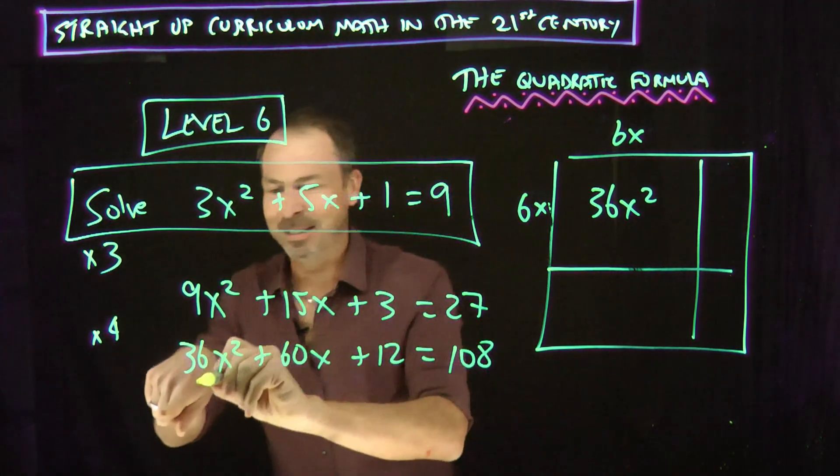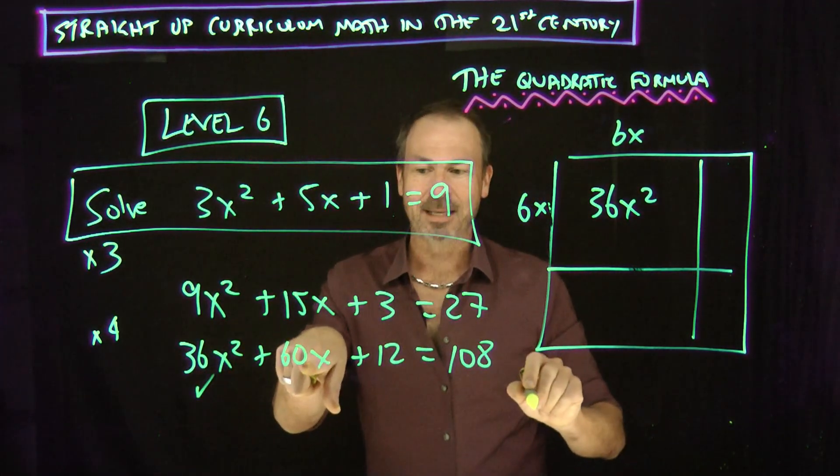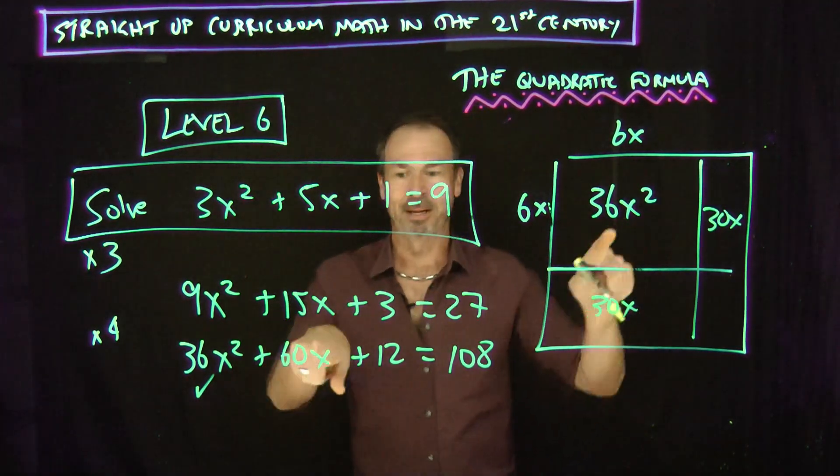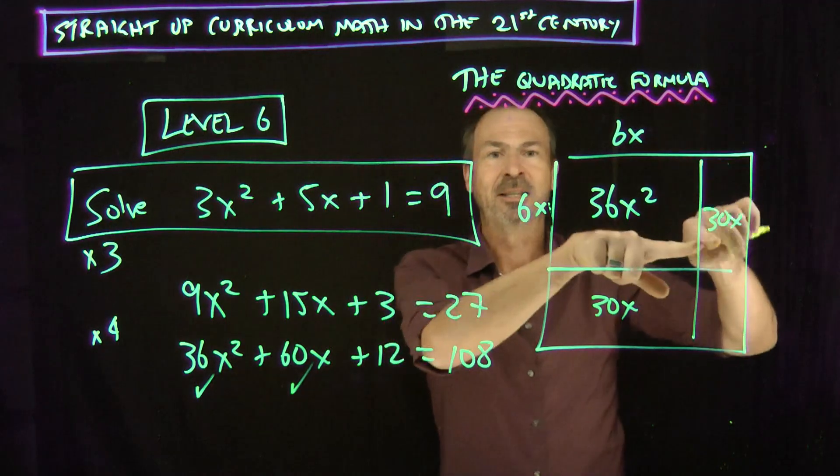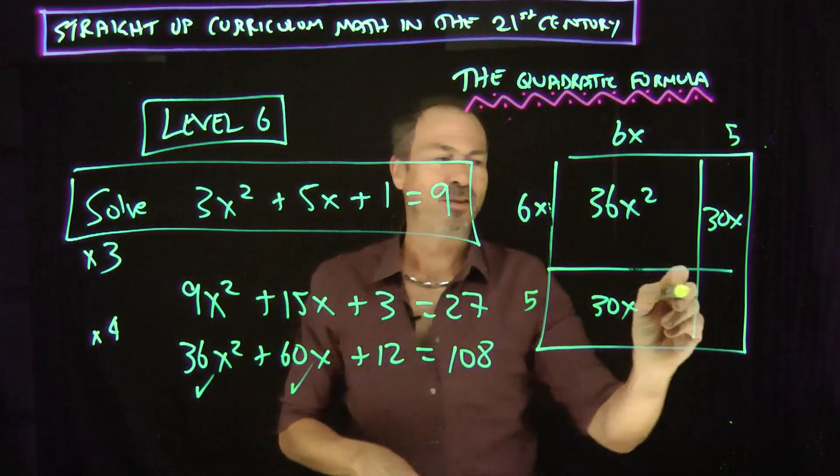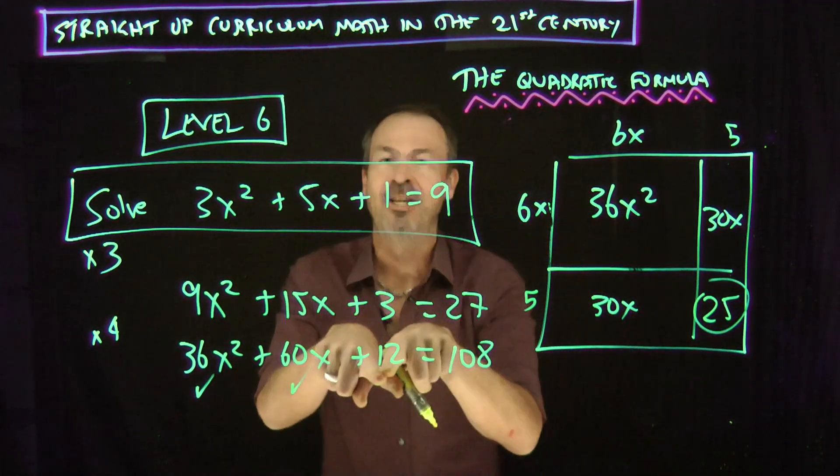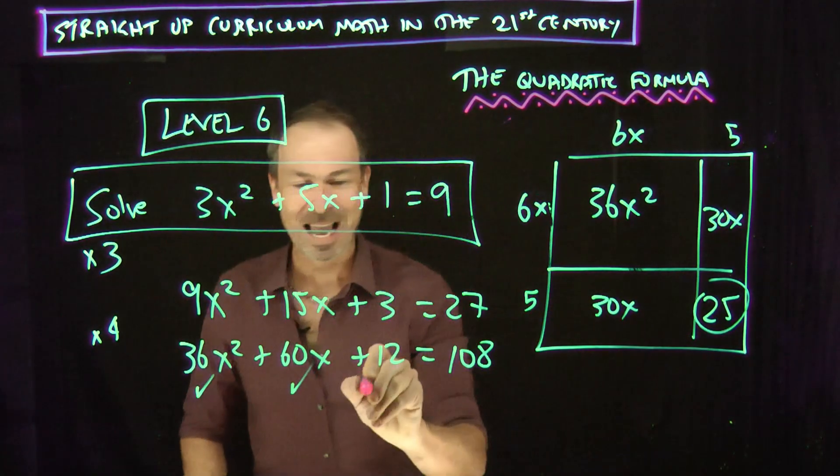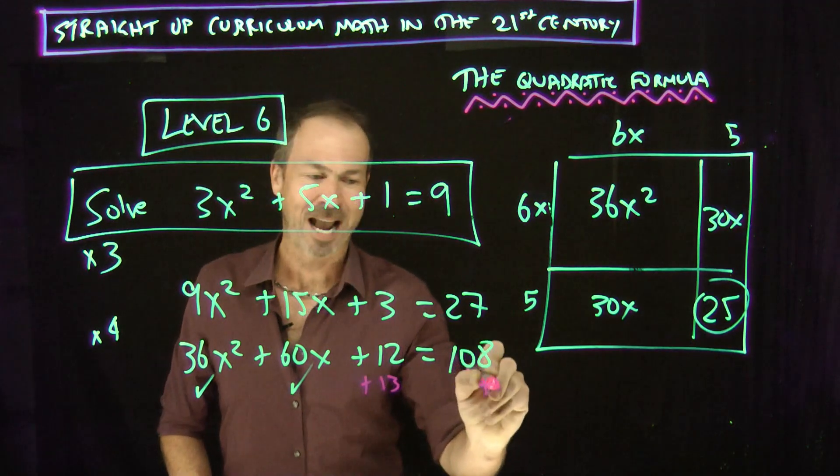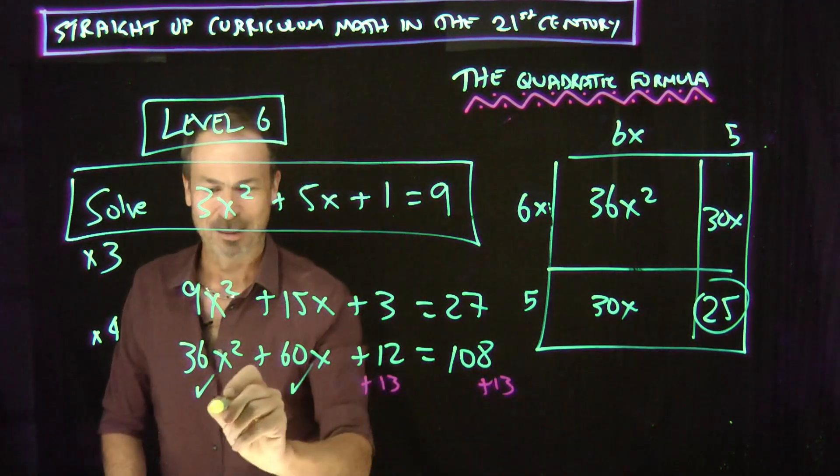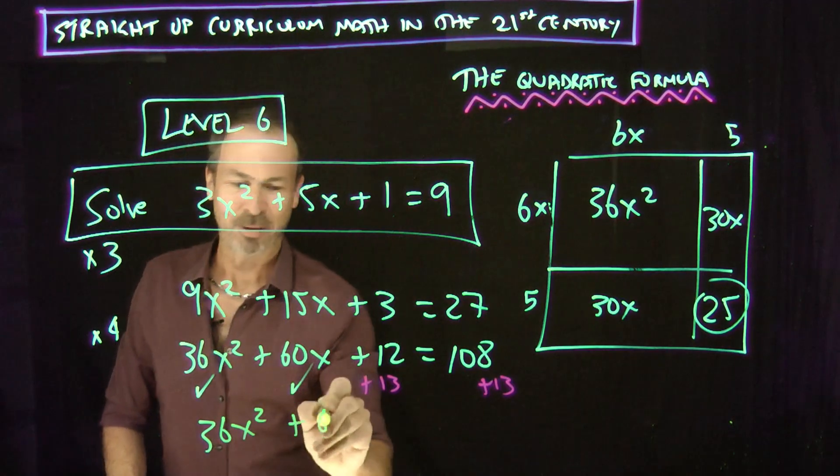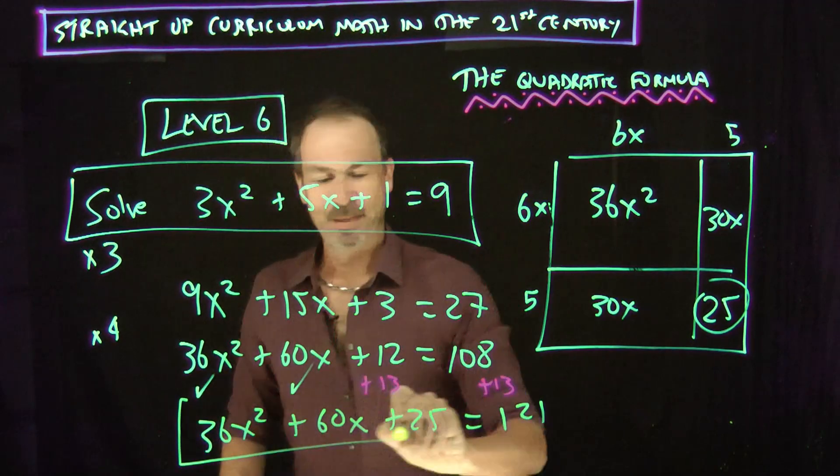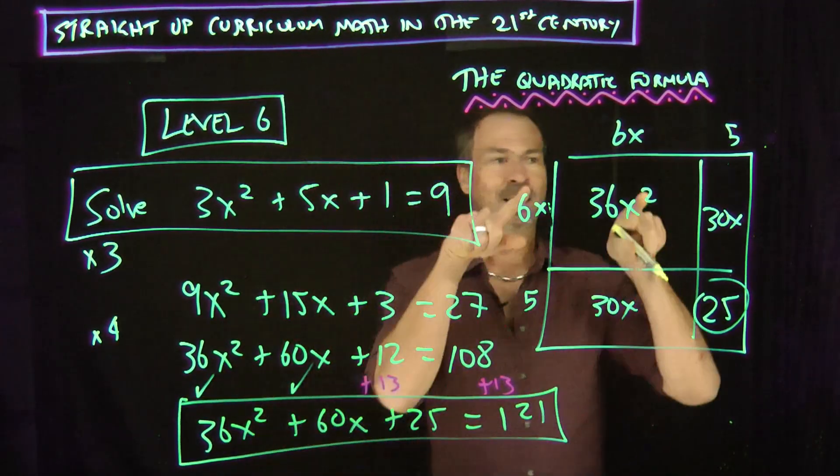This piece, 30x and 30x is fine. That's nice whole numbers split in a symmetrical way. Something times 6x makes 30x. 5. I want a final piece of 25. I don't have it. But I'm not going to panic. Because there's something in life I want. Make it happen. Add 13. Do all the consequences. So what I've really got here now is 36x squared plus 60x plus 25 is 121.